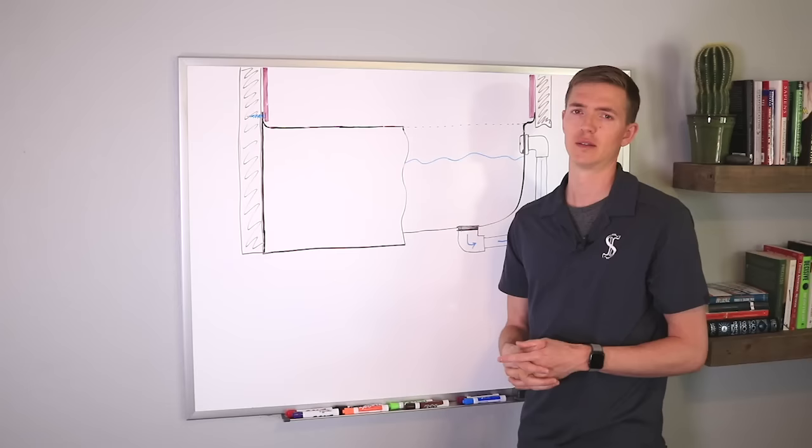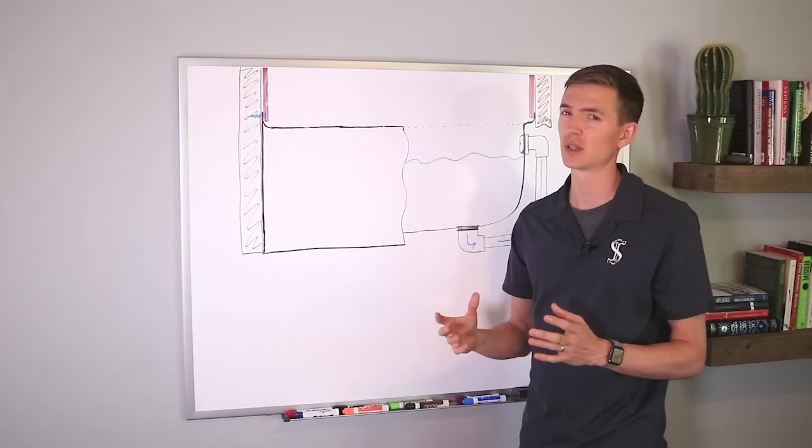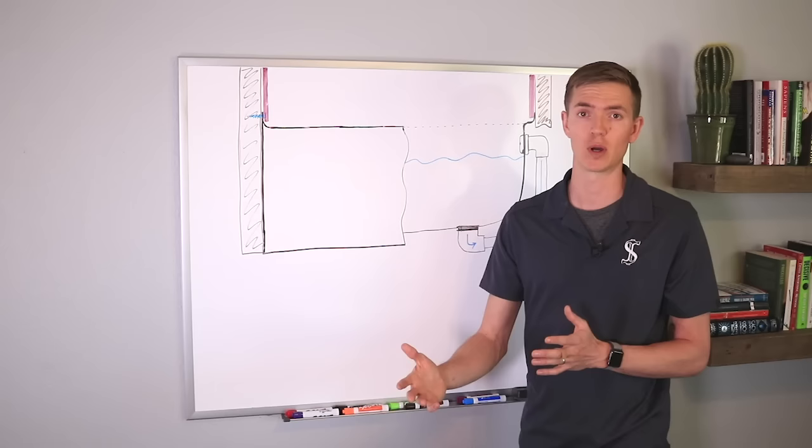The second thing you want to consider is the material the tub is made out of. Tubs come in all kinds of different materials from cast iron to plastic. Now cast iron tubs are typically going to weigh about 300 pounds or even more. So that's usually going to be pretty challenging to install for one person or even a group of DIYers. You might want to get a pro to do that.